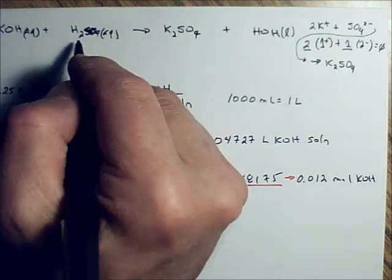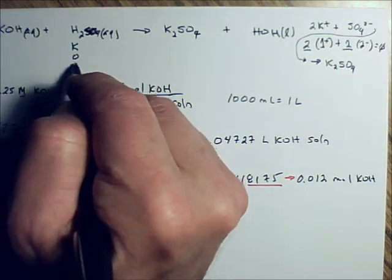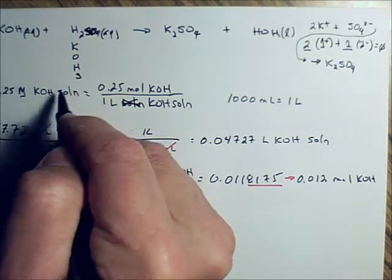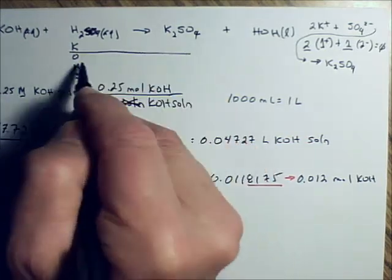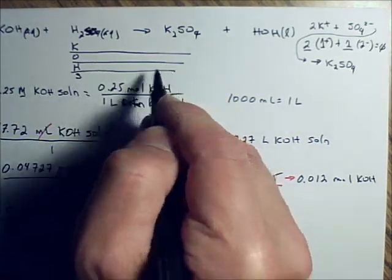Now we're going to write an atom inventory: K, O, H, and S. And we're going to balance the equation using this atom inventory.